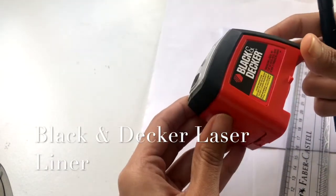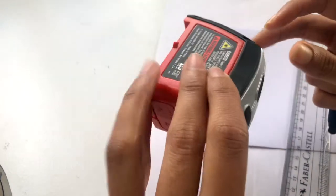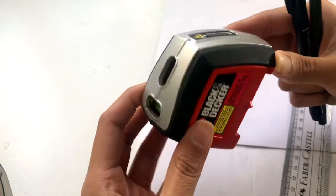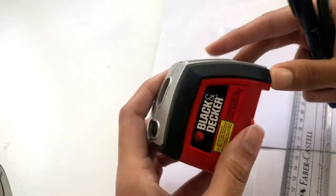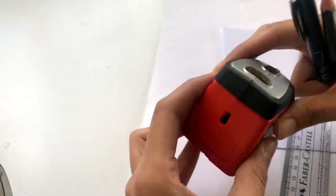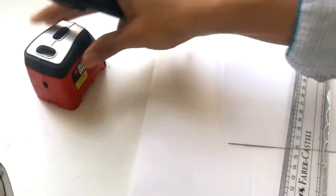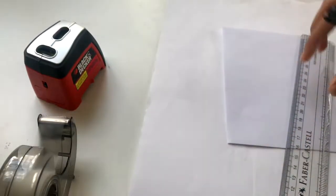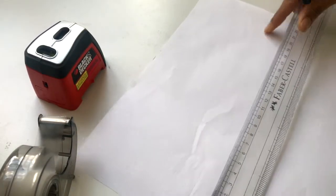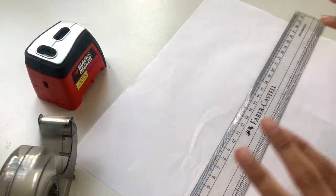Your laser liner of course - I'm using one from Black and Decker. You can easily find it on Amazon if you click one of the links in the blog post, or just Google Black and Decker laser liner. And some scotch tape. Alrighty, let's get going.